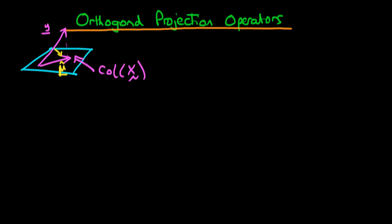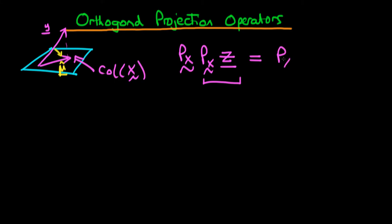Another property the projection operator should have is that if I apply the projection operator to something which has already been projected onto the column space of X — so assume we have some vector Z and we project it onto the column space of X, and then we project that again onto the column space of X — that should just yield PX times Z, because we've already projected it onto the column space of X.